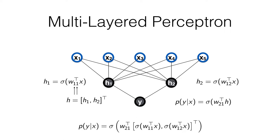One important thing: I've written the output as p(y|x), interpreting it as a probability. For neural networks we don't always require the output to be a probability — it could be any scalar, vector, or tensor — but here it's a scalar between 0 and 1 that we'll interpret as the probability that y is the positive label given x. This will guide our choice of loss function.